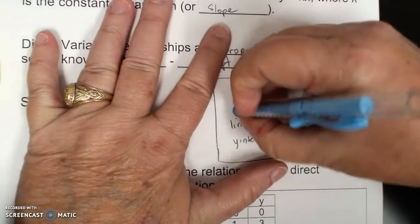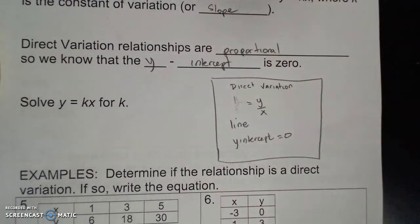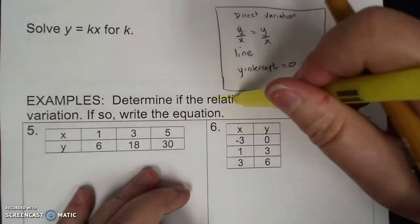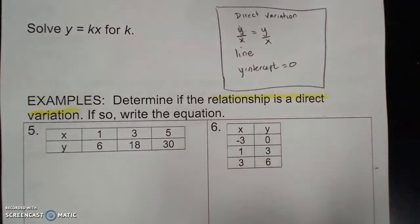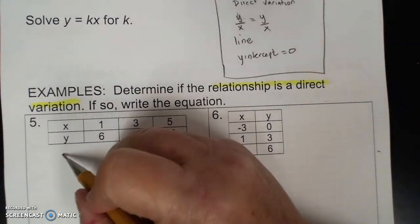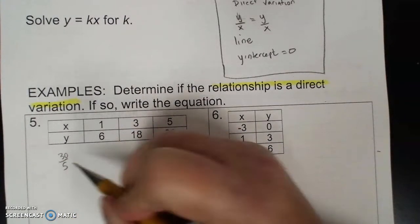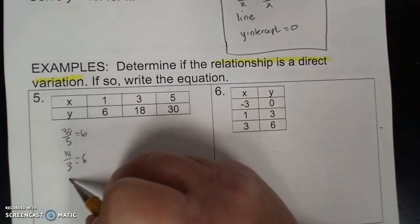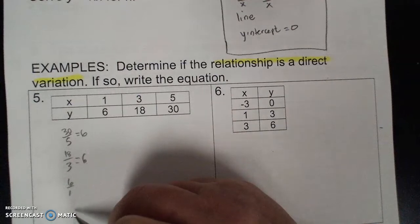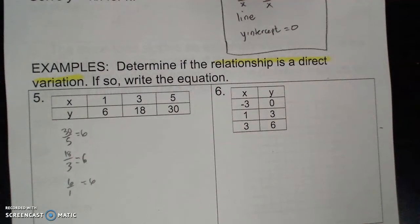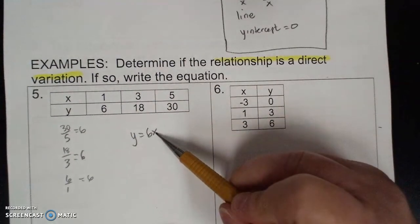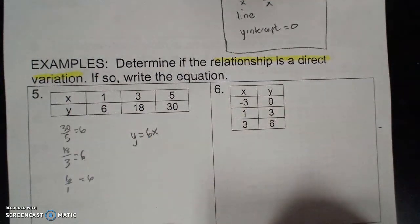I go through a checklist to decide whether it is a direct variation. So if it says determine if the relationship is a direct variation, I'm going to go y over x. So 30 over 5, that's 6. And 18 over 3, that's 6. And 6 over 1, that's 6. So the y over x is the same. Then y = 6x is the equation, because every time I have an input and multiply it by 6, I get that. So yes.